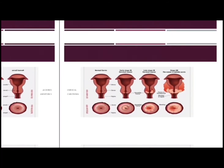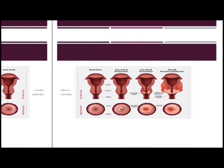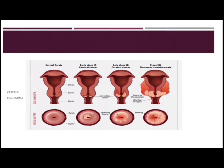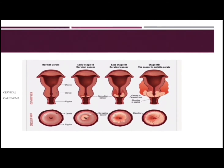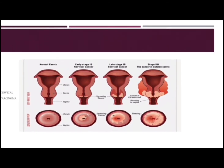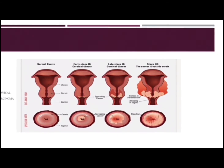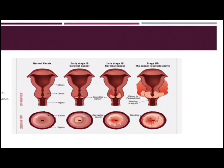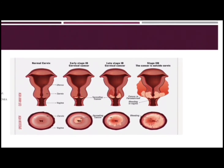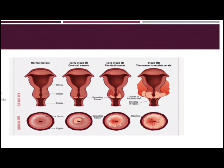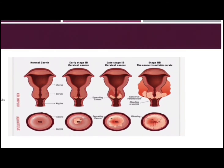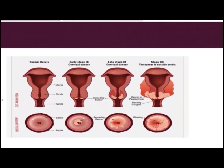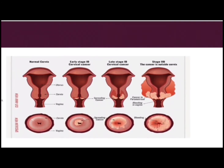Cervical carcinoma is a cancer arising from either the exocervical squamous epithelium or the endocervical glandular epithelium. Various strains of human papillomavirus, a sexually transmitted infection, play a role in causing most cervical cancer. Cervical cancer is divided into two main types: squamous cell carcinoma and adenocarcinoma. Squamous cell carcinoma begins in the thin, flat cells lining the outer part of the cervix which projects into the vagina, and most cervical cancers are squamous cell carcinomas.